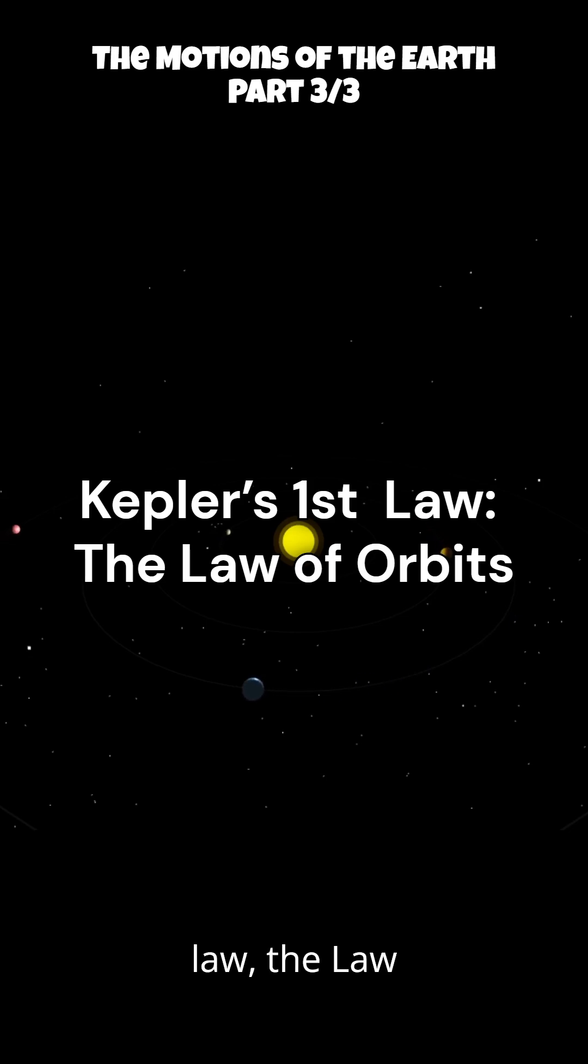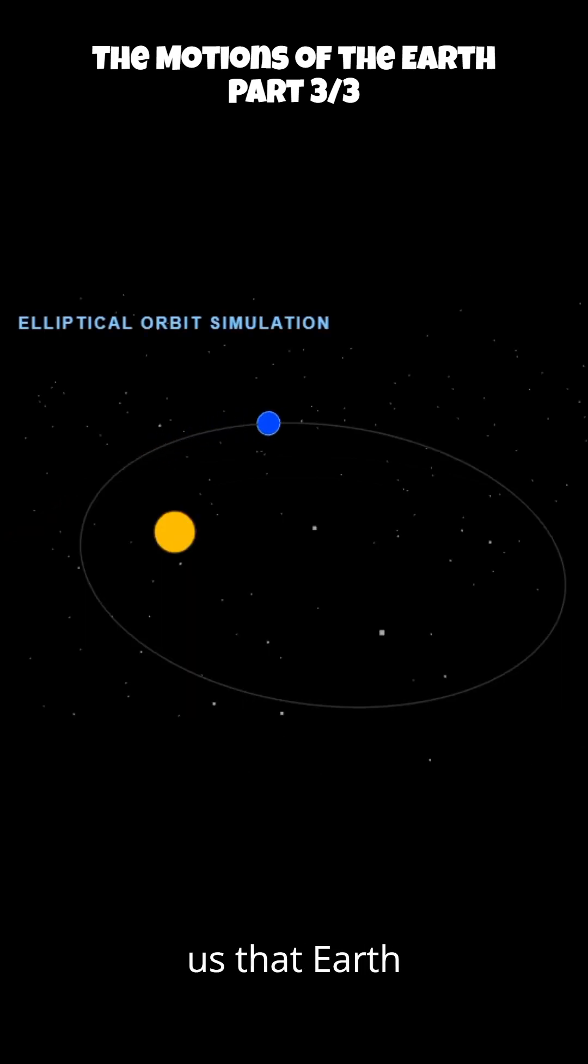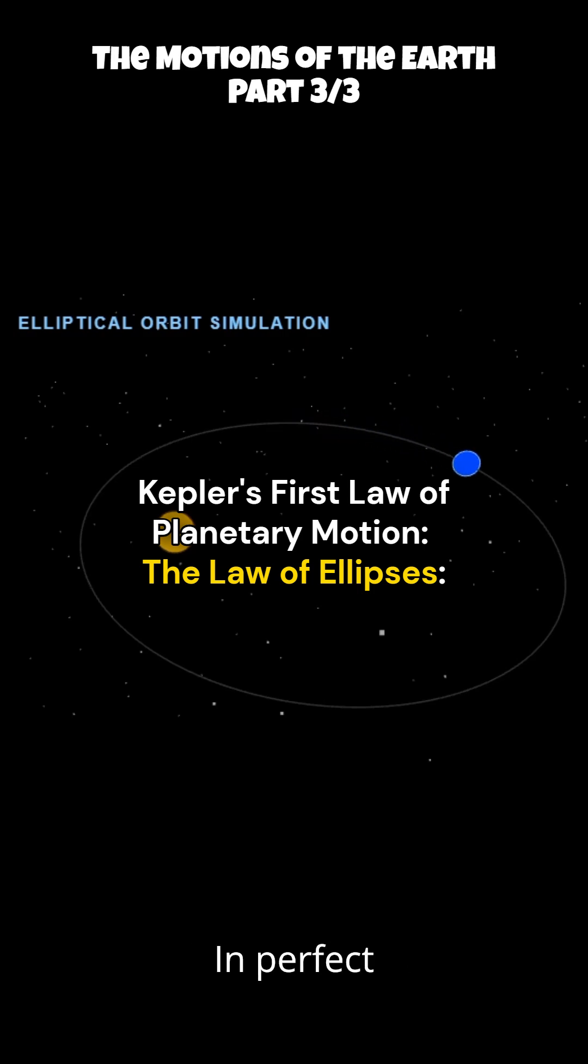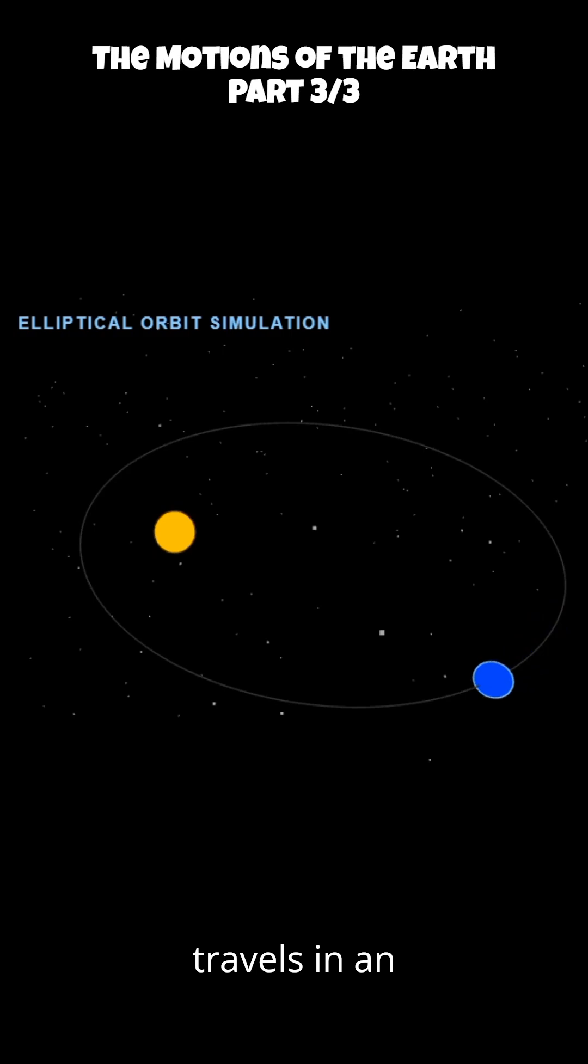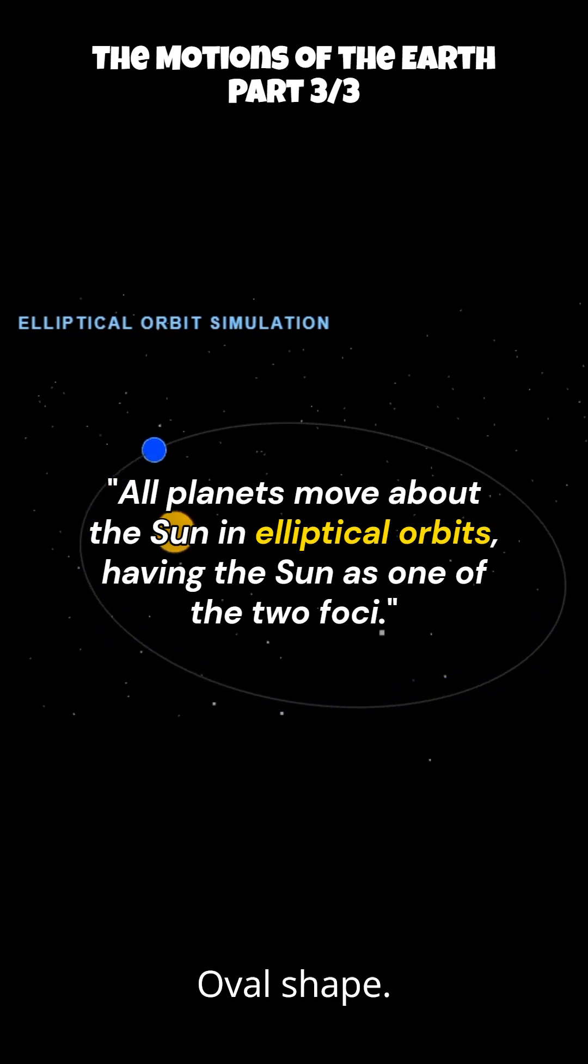Kepler's First Law, The Law of Orbits. This law tells us that Earth doesn't move in perfect circles around the sun. Instead, Earth travels in an ellipse, which is like an oval shape. The sun is located at one of the two special points inside this oval, called foci.